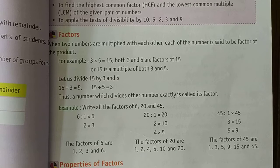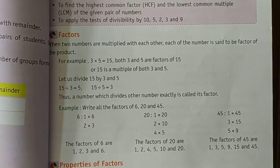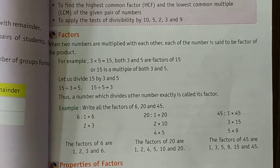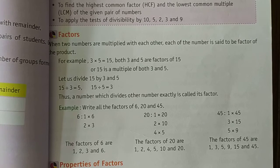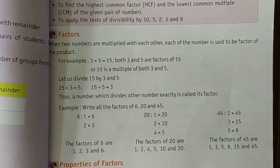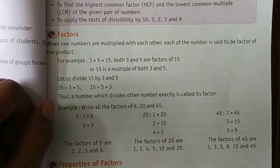So 20 has 4 factors: 1, 5, 10, and 20. Now let's find the factors of 15. 15 is divisible by 1, 3, 5, and 15. So the factors of 15 are 1, 3, 5, and 15.